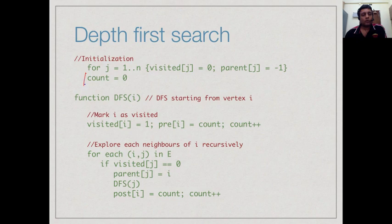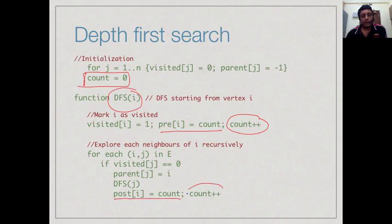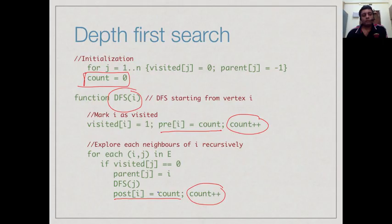We associate with each vertex the value of the counter when we first entered it — called the pre number — and the value when DFS of that vertex exited — called the post number. We start by initializing the counter to 0. Whenever we invoke DFS of i, we assign the current counter value to pre[i] and increment the counter. Likewise, when about to exit, we mark post[i] equal to count and increment again. In between, many recursive calls happen, so the count at exit will be very different from the count at entry.